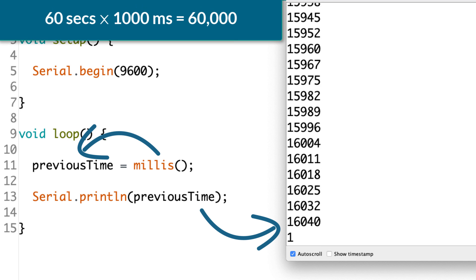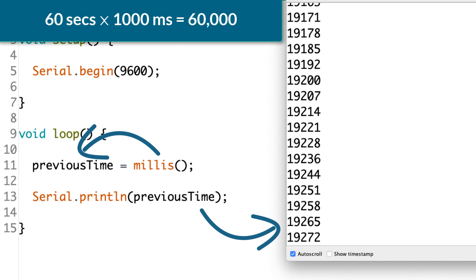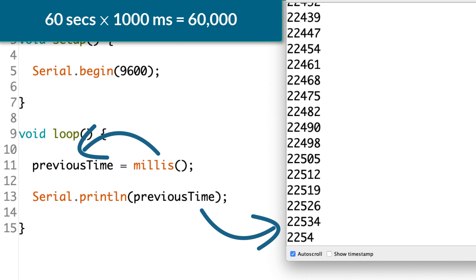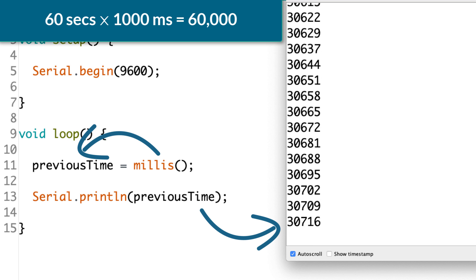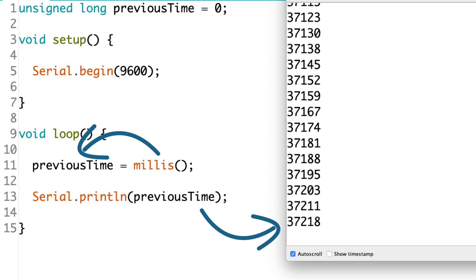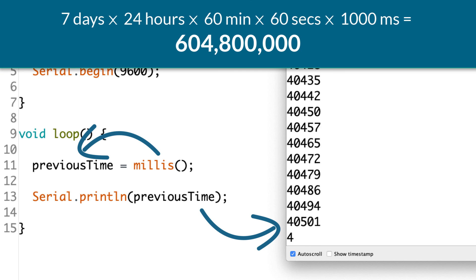After one minute of being powered up, the millis function would return the number 60,000 since every second has a thousand milliseconds and every minute has 60 seconds. So that'd be 1000 times 60. If you waited seven days, the number returned by millis would be over 600 million.